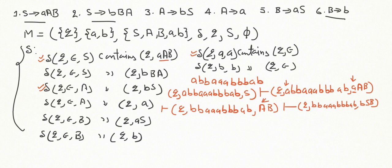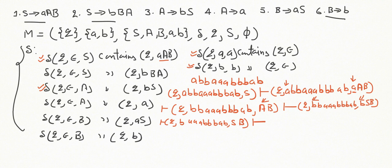Since the top of the stack is 'b' and the input pointer is at 'b', we apply δ(q, b, b) → (q, ε), removing 'b' from the stack. The next ID is (q, bbaaabbbbbab, SB). We then apply the rule for S, giving the next ID: (q, bbaaabbbbbab, BBAB) — since S is replaced by BBA concatenated with the remaining stack.